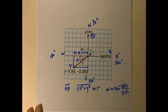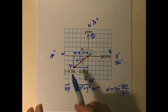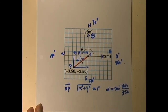But if we use rectangular Cartesian coordinates, then OP is very clearly described as x = negative 3.5 and y = negative 2.5.